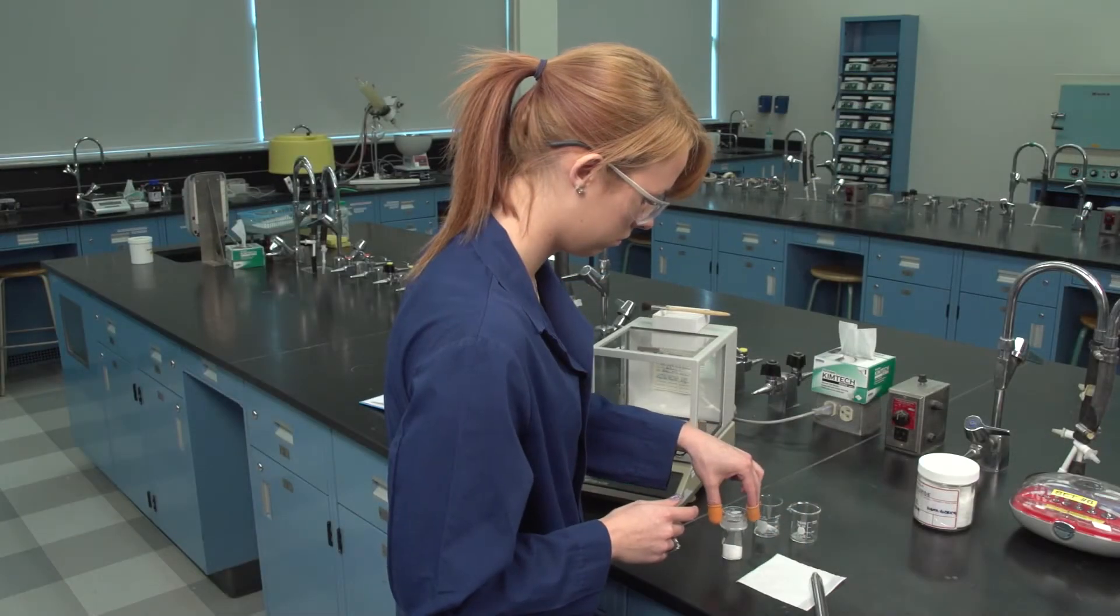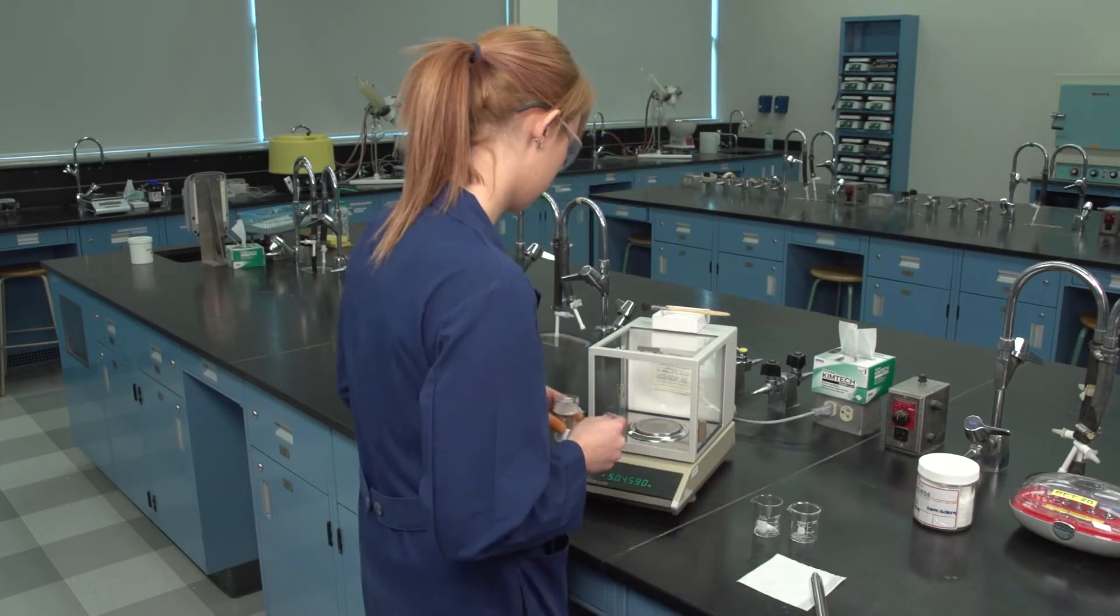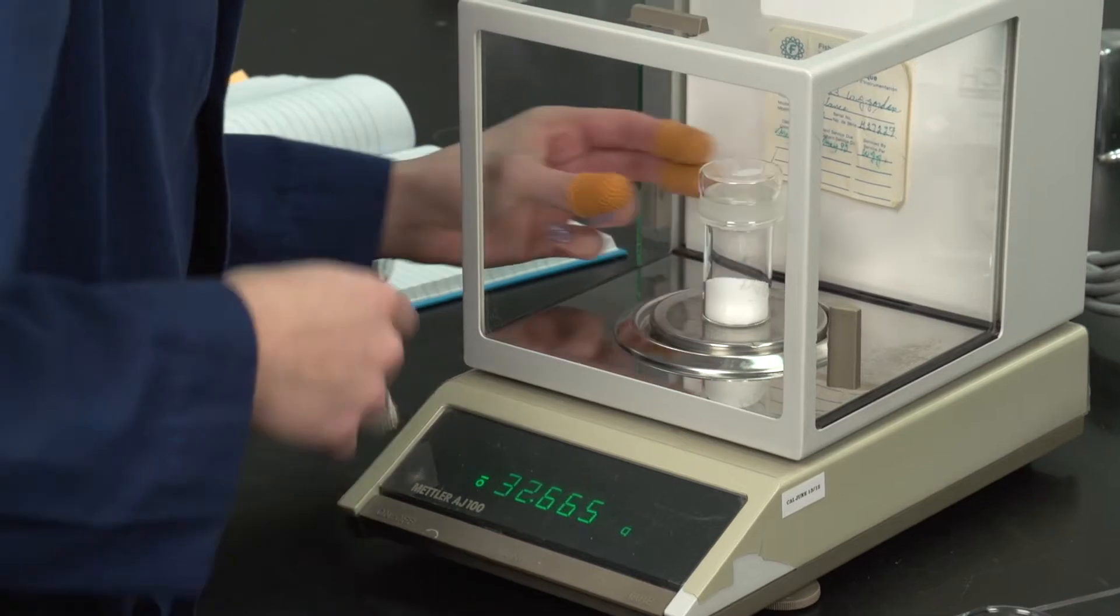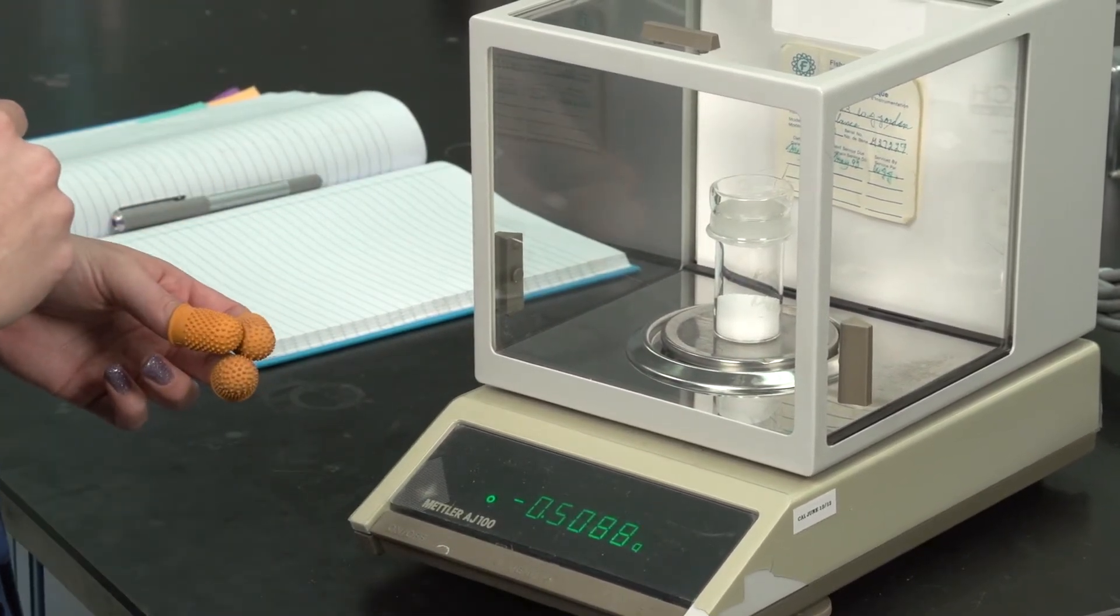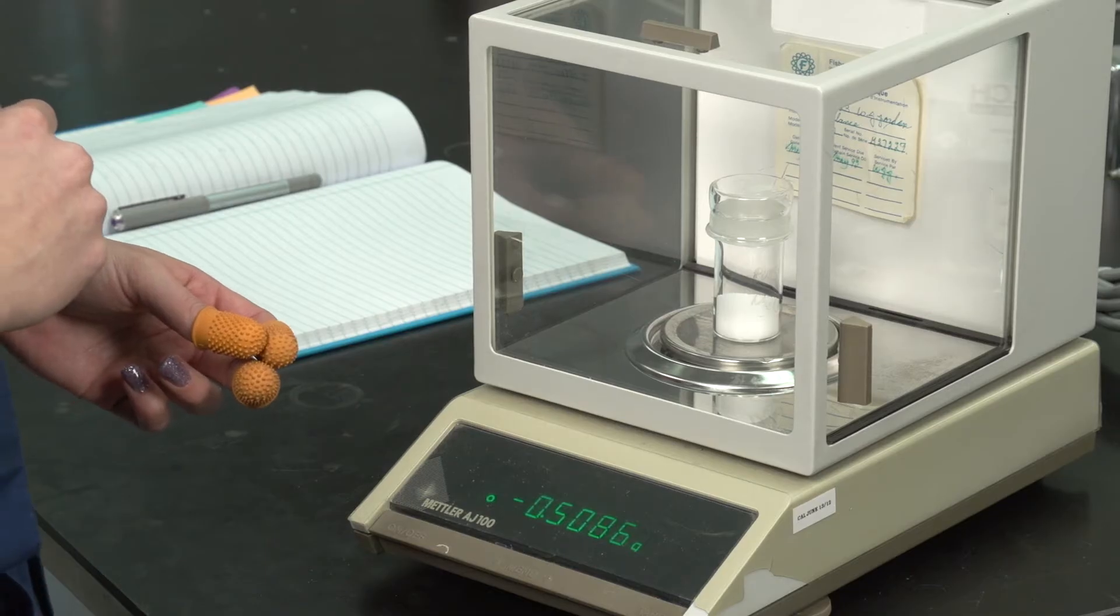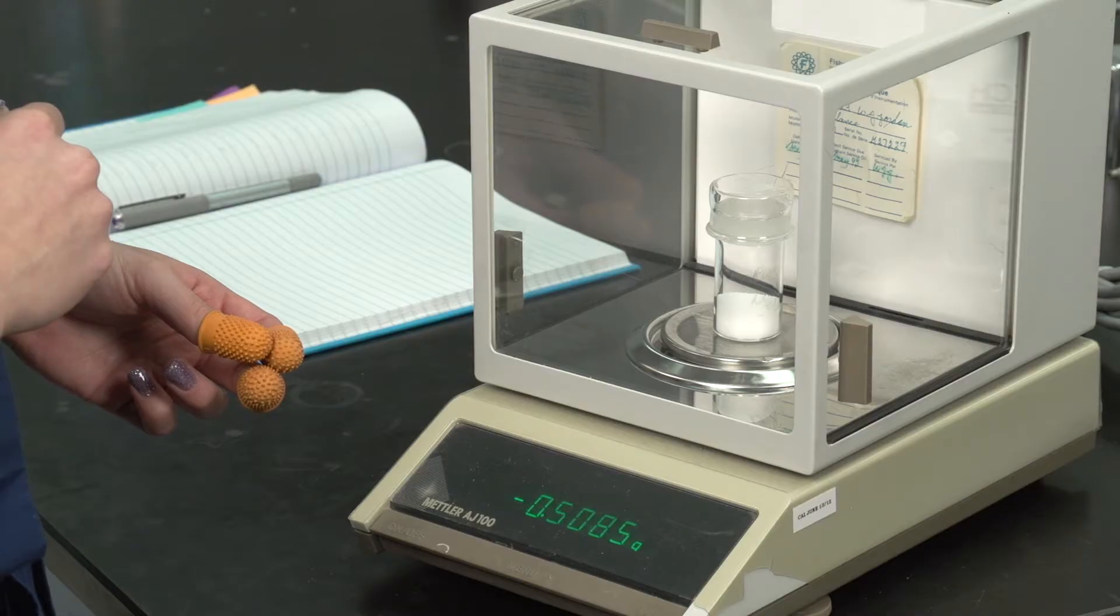Weighing by difference with tare is a method used when several duplicate masses of a material must be weighed out. The bulk sample mass is tared and the required sample removed. The result is a negative value on the balance.